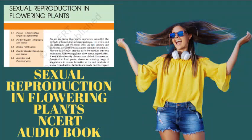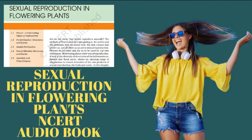Structure of Microsporangia: In transverse section, a typical microsporangium appears nearly circular in outline. It is generally surrounded by four wall layers: the epidermis, endothecium, middle layers and the tapetum. The outer three layers perform the function of protection and help in the dehiscence of the anther to release the pollen. The innermost wall layer is the tapetum, which nourishes the developing pollen grains. Cells of the tapetum possess dense cytoplasm and generally have more than one nucleus. When the anther is young, a group of compactly arranged homogenous cells called the sporogenous tissue occupies the center of each microsporangium.